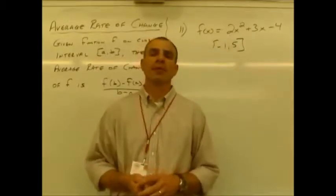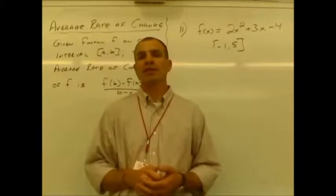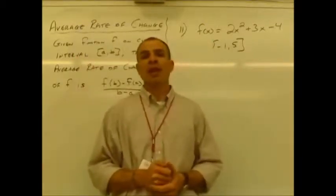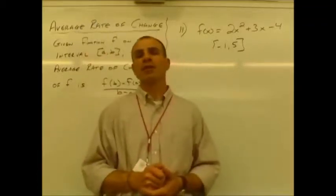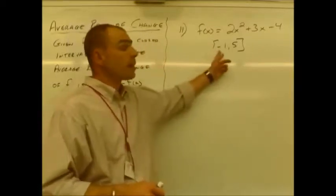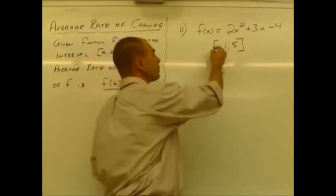Okay, one final example. This time we're doing the average rate of change, and we're actually given the definition of the function. So you see here, this is example number 11. We see that f of x is equal to 2x squared plus 3x minus 4, and we're looking to find the average rate of change of this function over the closed interval from x equals negative 1 until x equals 5. Let me just fix that there.